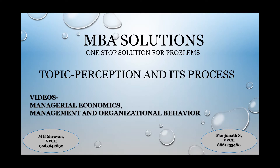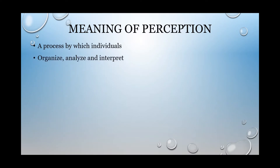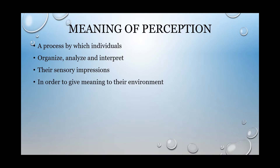First, let us understand the meaning of perception. Perception is a process where individuals organize, analyze, and interpret their sensory impressions in order to give meaning to their environment. Each and every individual will try to organize, analyze, and interpret whatever information we receive through our sense organs.